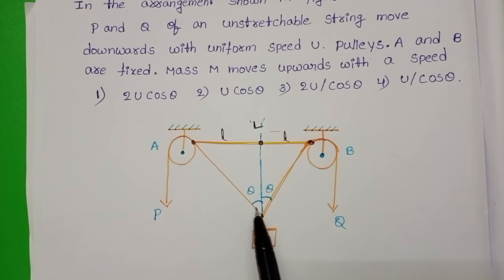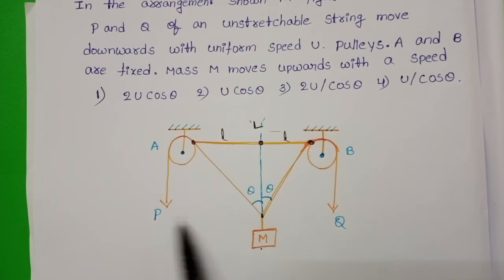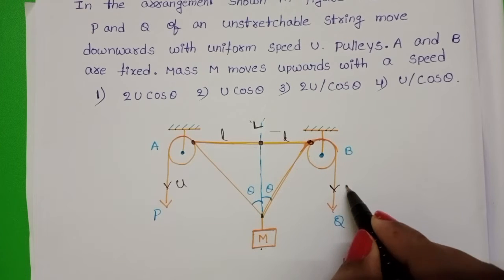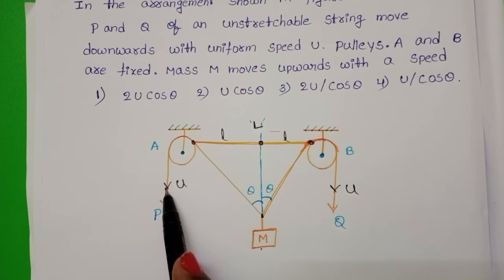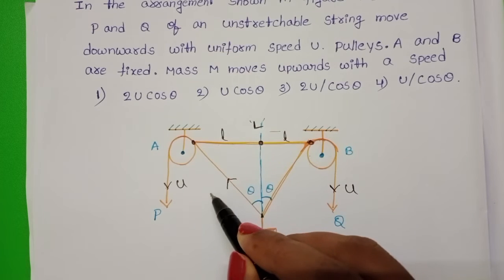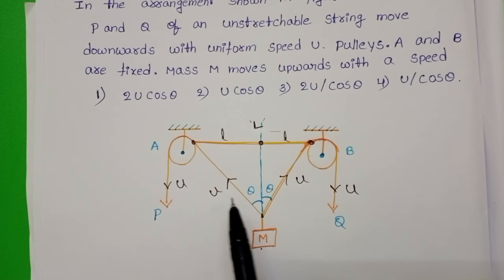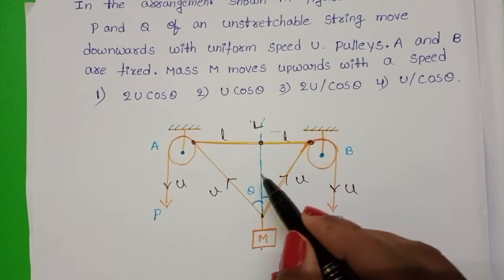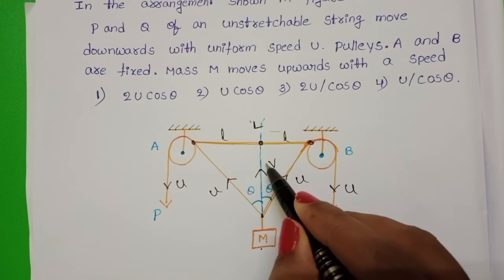With the help of an unstretchable string, mass M is attached to the pulleys. When we pull these two ends in downward direction with the constant speed U, then this mass moves in upward direction. So here speed is U. Then along this direction also speed U. And here also speed is U. So whenever we pull these two ends in downward direction, this mass moves in upward direction.